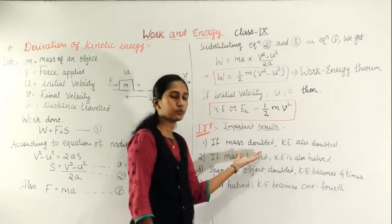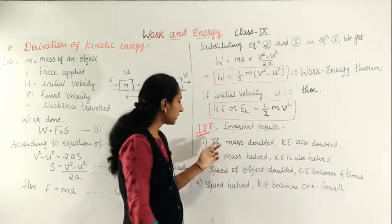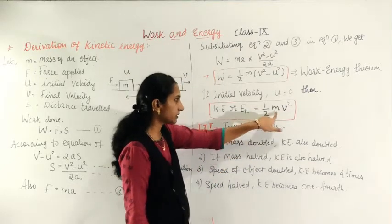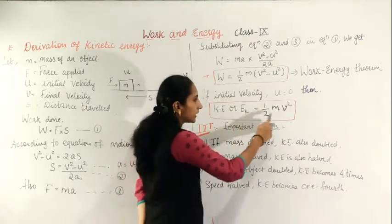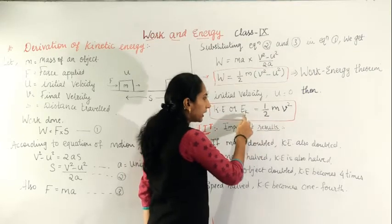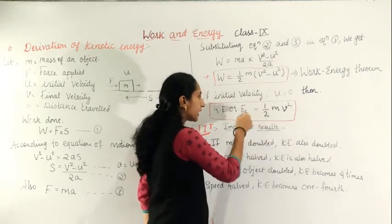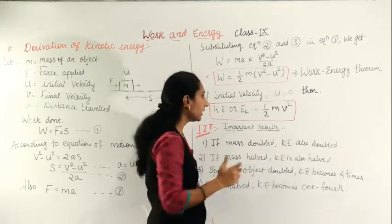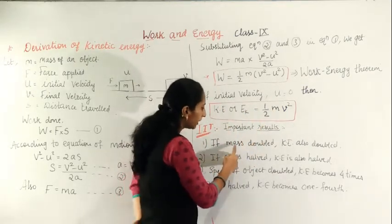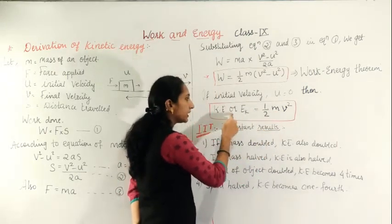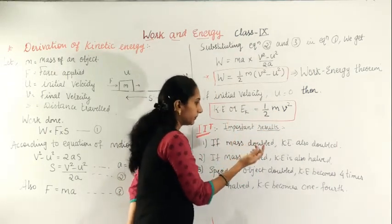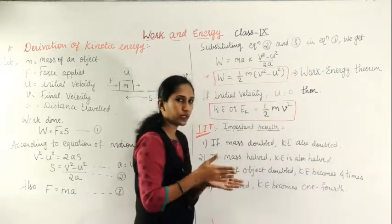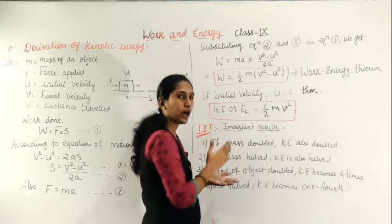From KE = ½mv², mass m and kinetic energy are directly proportional. If mass is doubled, kinetic energy is also doubled. If mass is halved, kinetic energy is also halved. This type of question can come in MCQ or IIT exams.